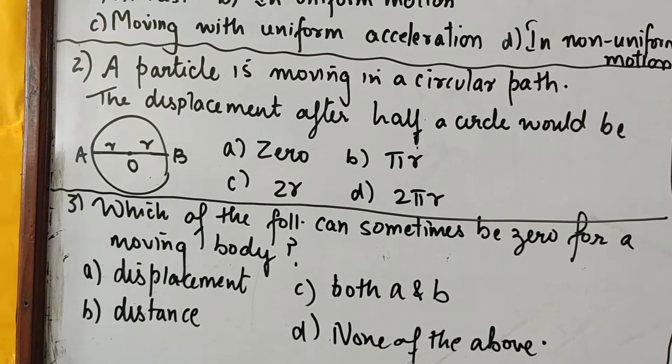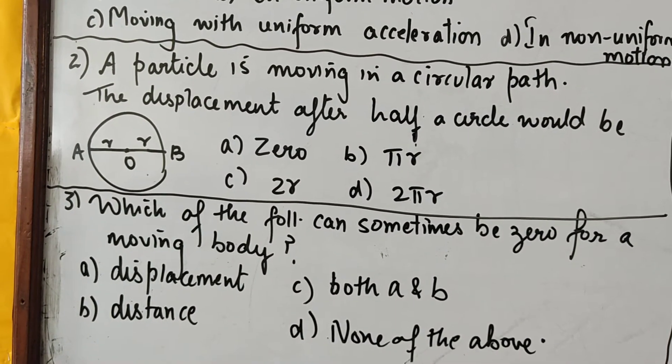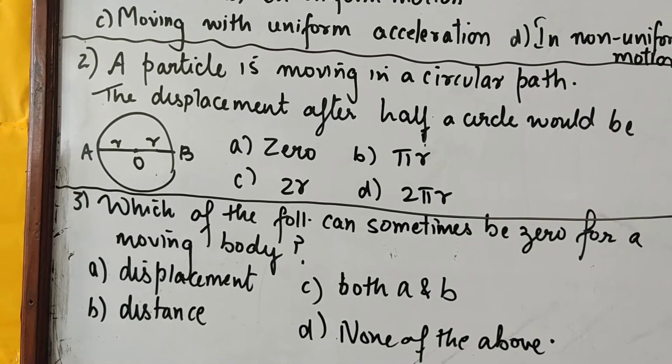So when initial and final positions are same, displacement is 0. Distance can never be 0. So obviously, our correct answer is displacement, A option.